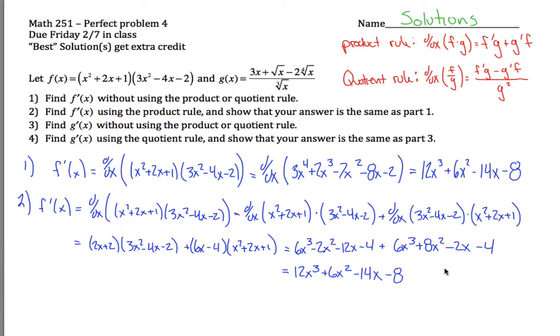If I did all my algebra perfectly, I'll have the same answer from both methods — and they look the same. Two different ways to find the derivative of f, both yielding 12x cubed plus 6x squared minus 14x minus 8.